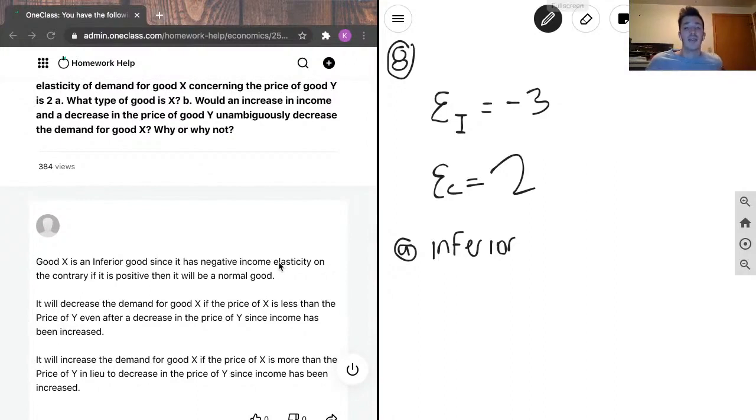It will increase the demand for good X if the price of X is more than the price of Y relative to a decrease in the price of Y, since income has been increased.